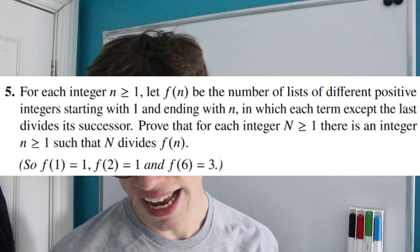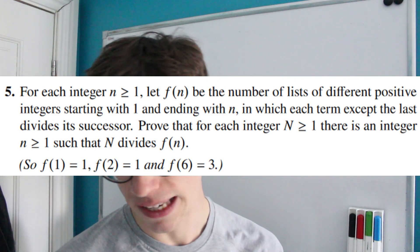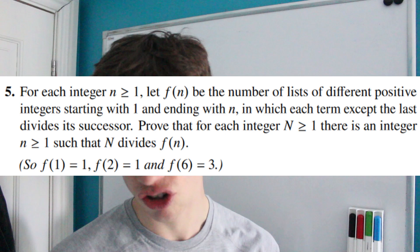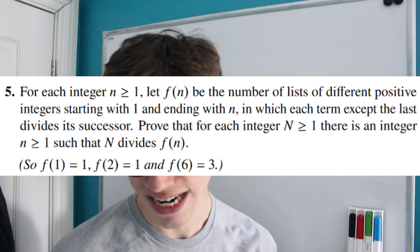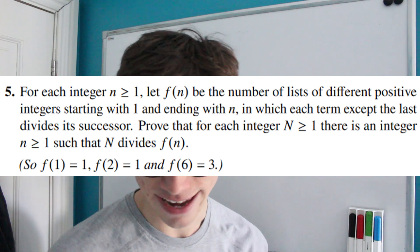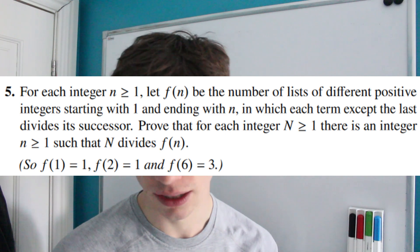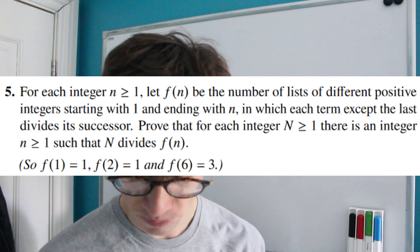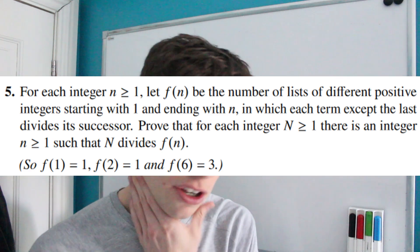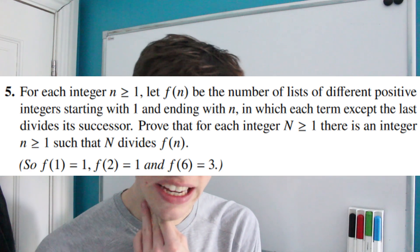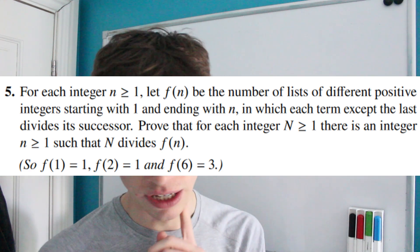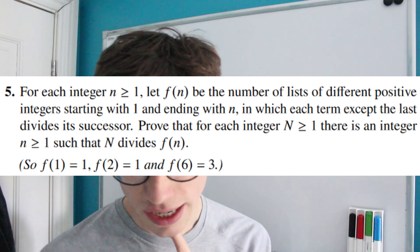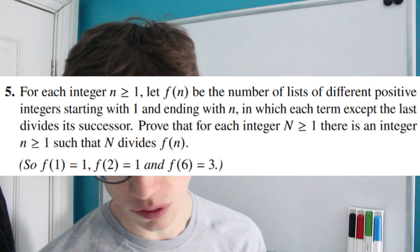The question says: for each integer n greater than or equal to 1, we let f(n) be the number of lists of different positive integers starting with 1 and ending with n, in which each term except the last divides its successor. We're then asked to prove...